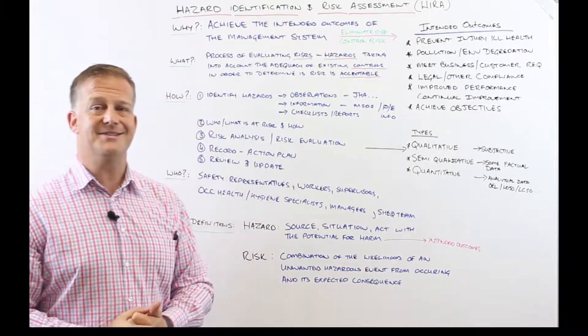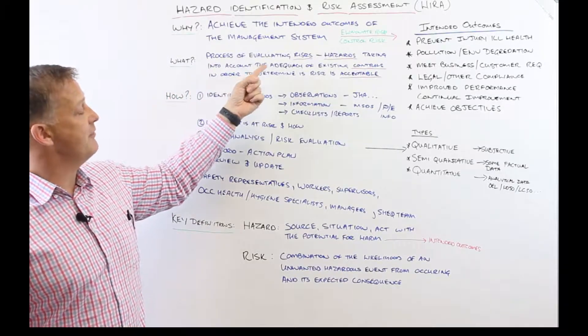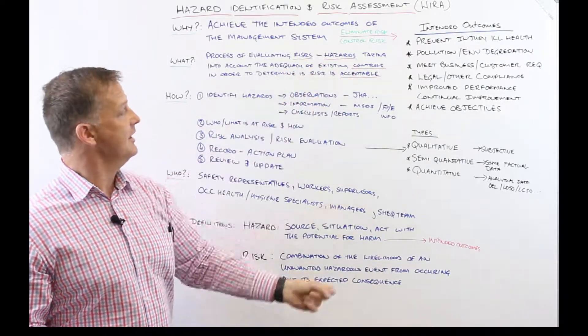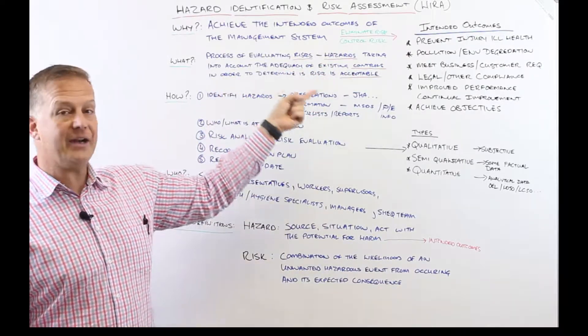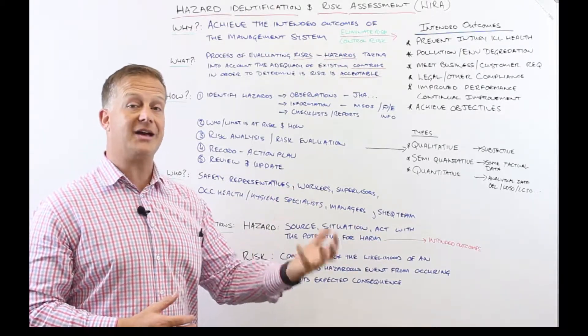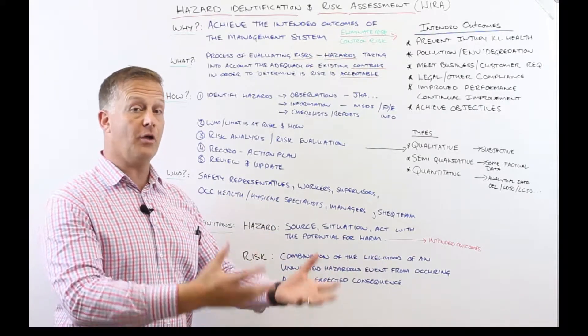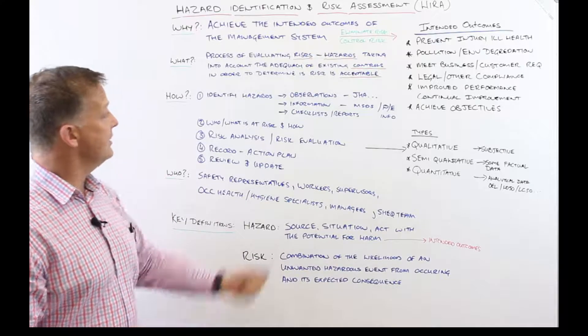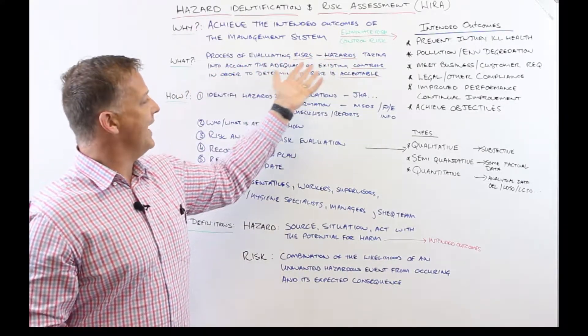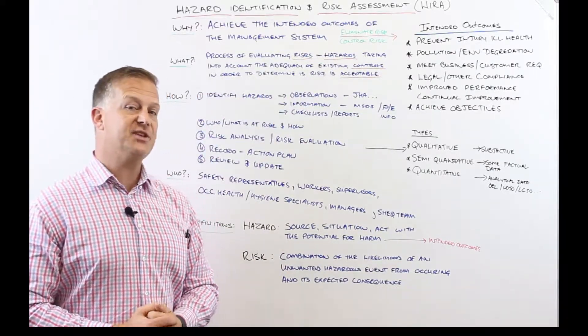So what is a risk assessment? Ultimately a risk assessment is a process of evaluating risks that are associated with hazards and taking into account the adequacy of existing controls. You may have controls in place but are they actually working? We need to evaluate hazards and consider the adequacy of existing controls in order to determine if the risk is acceptable.